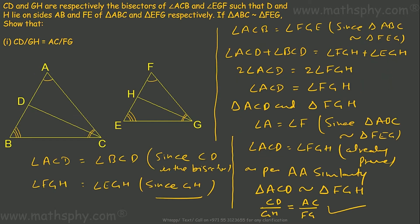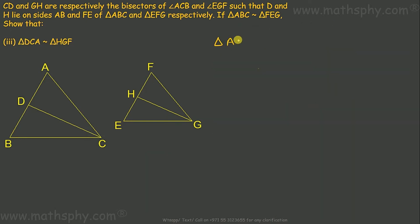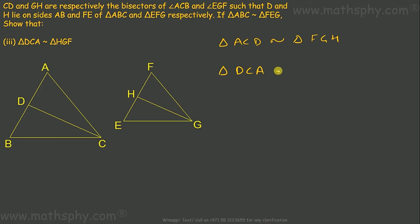For the third item, DCA similar to HGF: we already proved triangle ACD is similar to triangle FGH. We just need to rewrite the vertices in matching order. A goes with F, D goes with H, and C goes with G. So triangle ACD similar to triangle FGH is the same as writing triangle DCA similar to triangle HGF. Done.